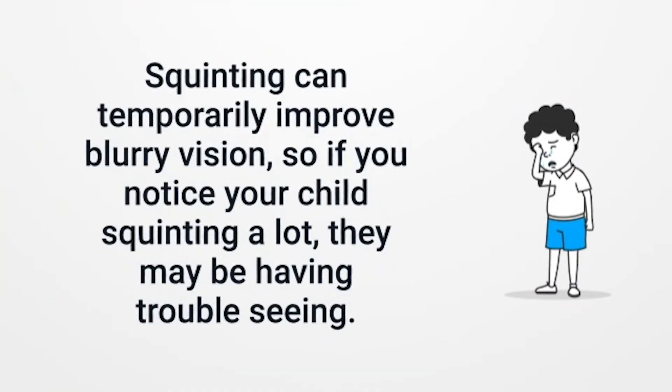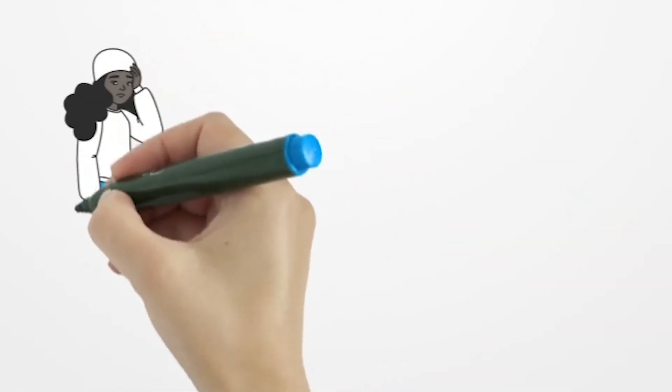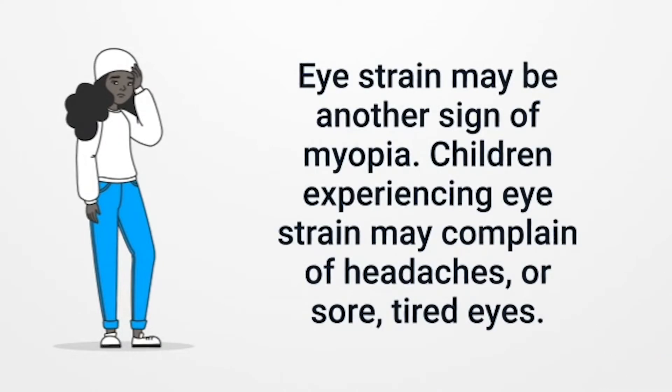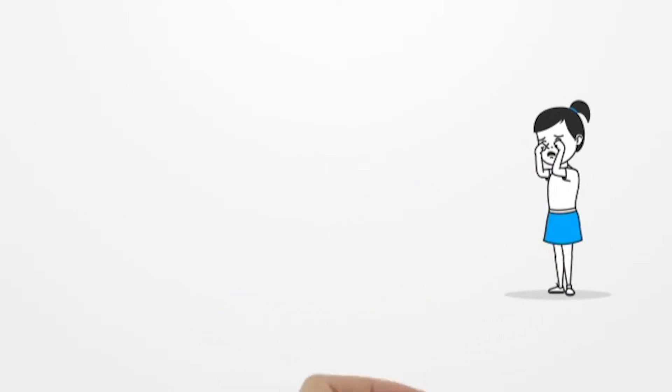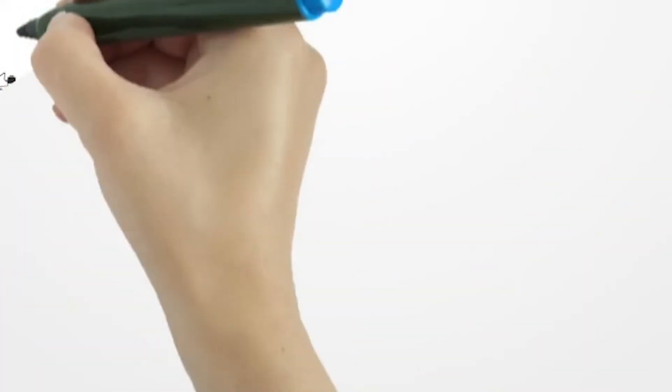Eye strain may be another sign of myopia. Children experiencing eye strain may complain of headaches or sore, tired eyes. They may also rub their eyes frequently.